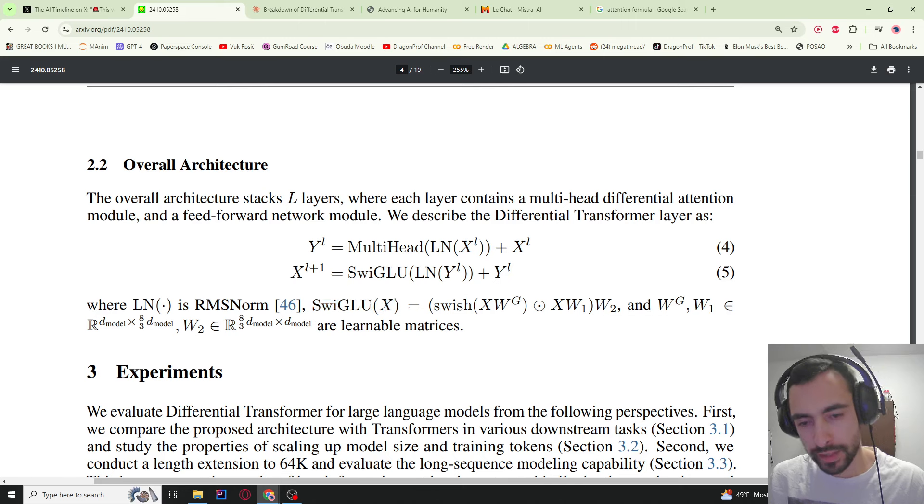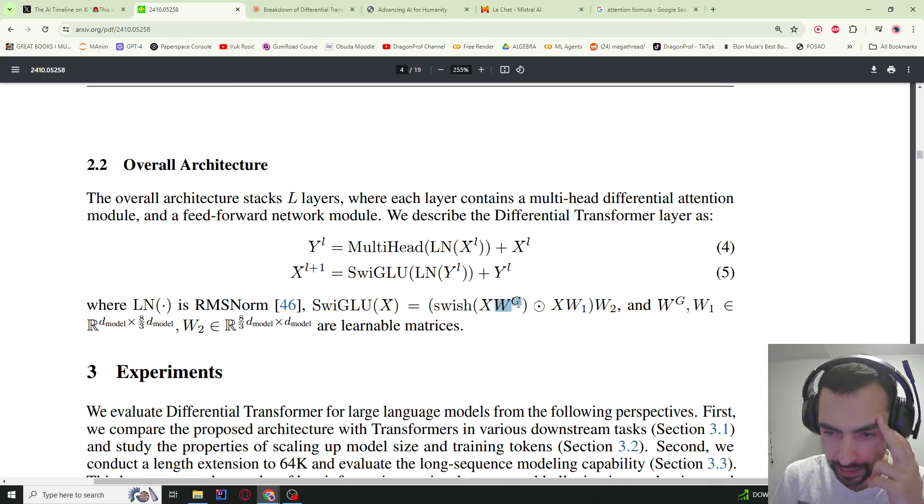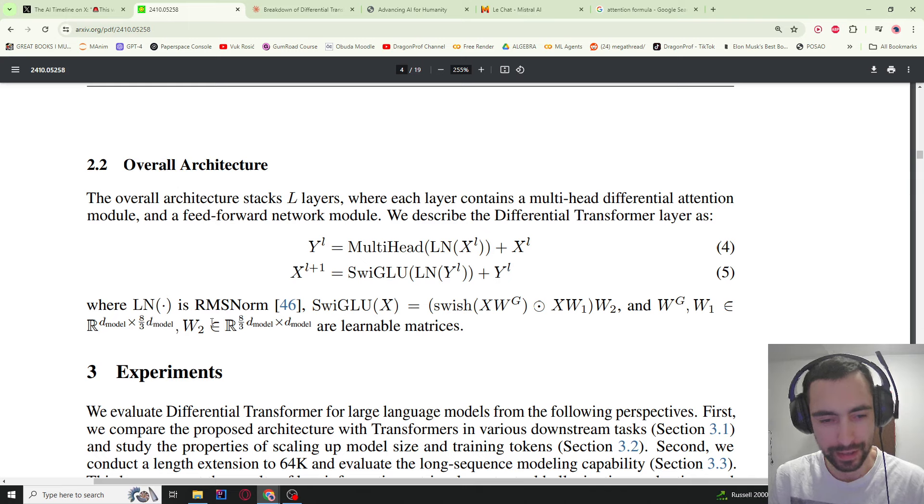This SwiGLU is more advanced than a normal feed-forward network, so it combines switch activation function and gated linear unit. This X is input to the whole, the beginning tokens. Then this is a learnable parameter, learnable parameters, this is element-wise multiplication. We have these weird dimensions, so this is the best I can explain it. It's not 100% clear to me either.